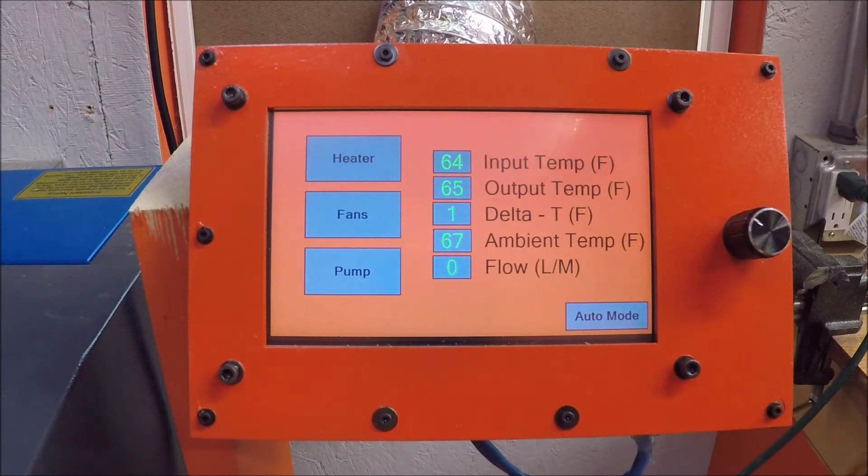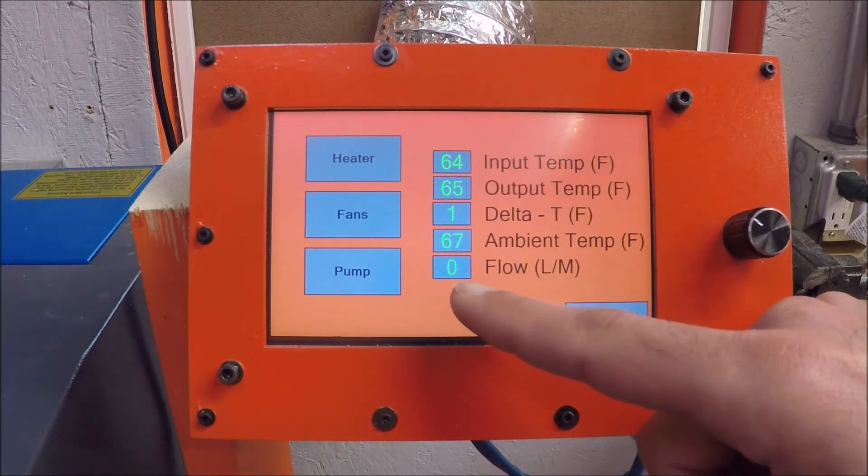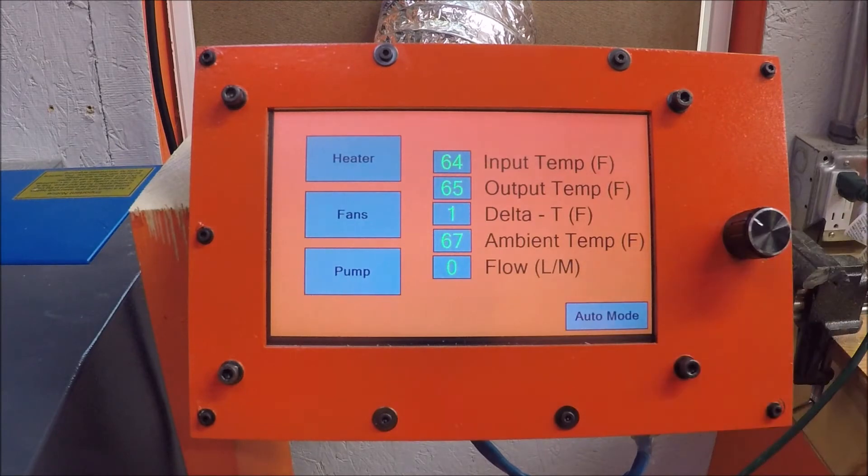The next item that it displays is the flow in liters per minute. So, there is a flow meter on this system which tells you how much water is flowing. I don't think it's super accurate, but it kind of lets you know if there's a clog or not a clog.